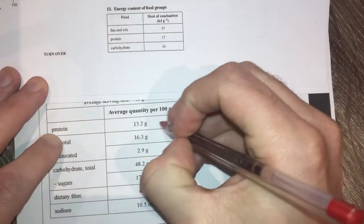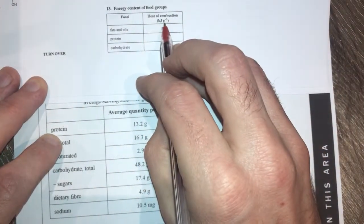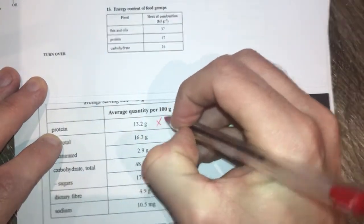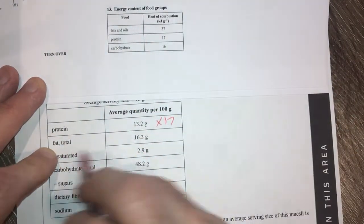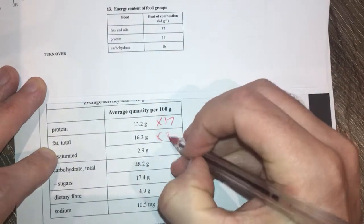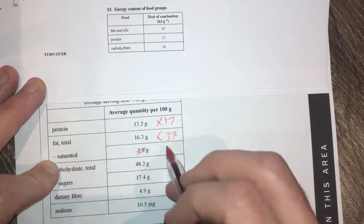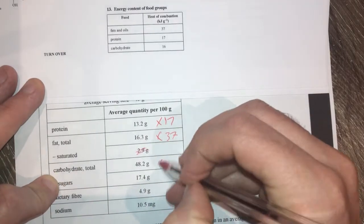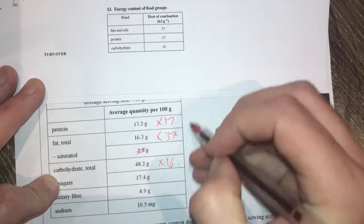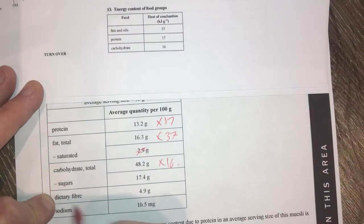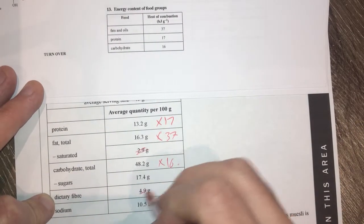So my data booklet here has the energy content of various foodstuff. So therefore my protein here is 17 kilojoules per gram. So that times by 17 will give me my energy of protein. My fats times that by 37. Carbohydrates times that by 16. That's going to give me my energies. Dietary fiber cannot be digested so I'm going to ignore that.